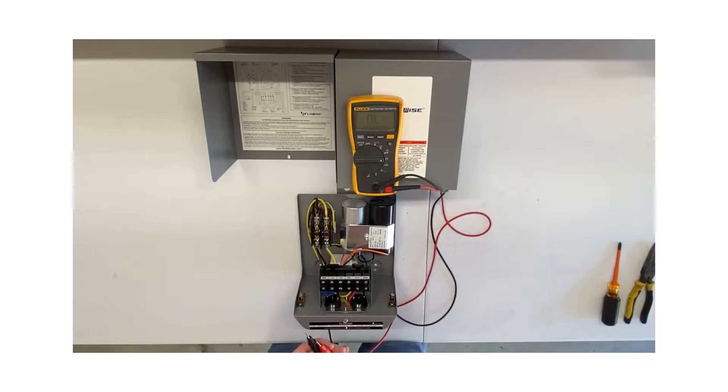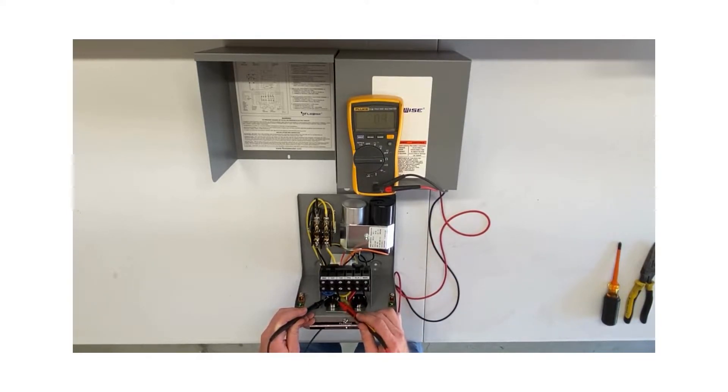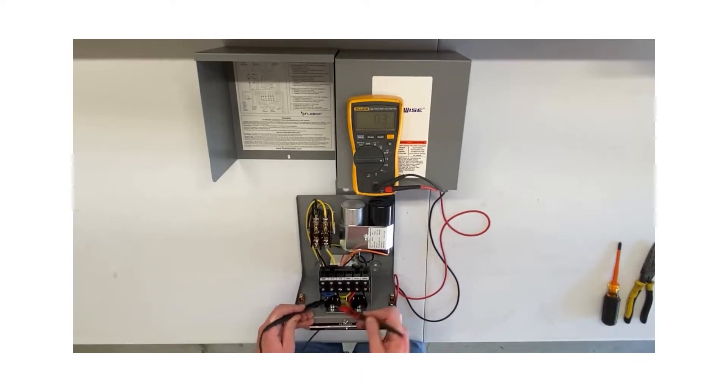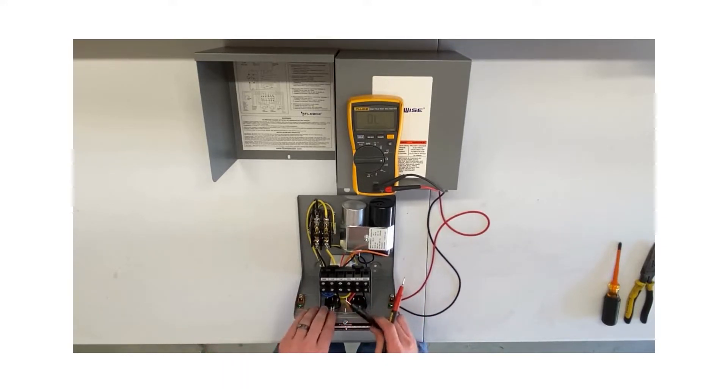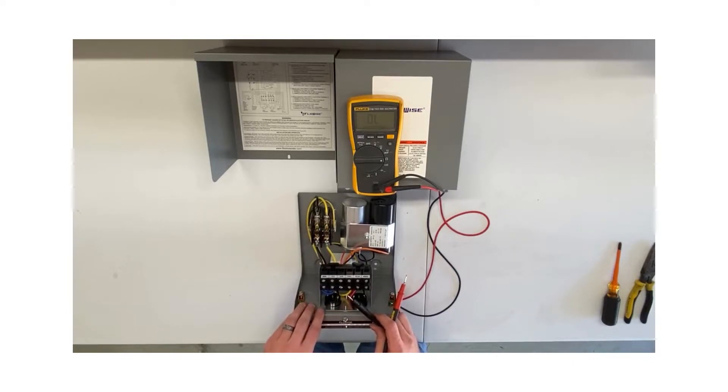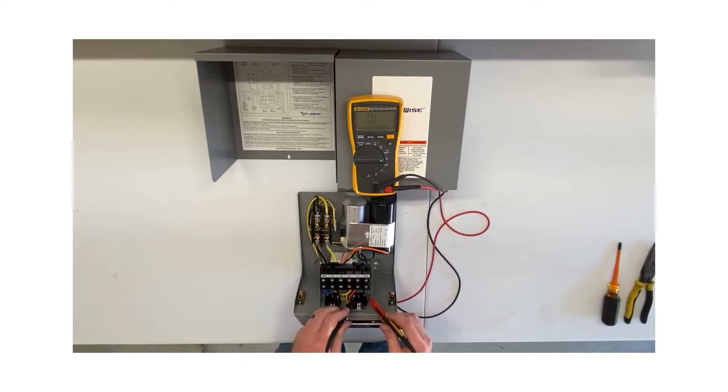I'm going to take one probe and touch it to one side of the overload and the other probe to the opposite side. I'm getting 0.3. My zero was 0.3, so when I subtract the two, I get zero. The manufacturer says for an overload to be good, the reading cannot be more than 0.5 ohms. We have zero ohms of resistance, which tells me this is good. Let's check the other one—0.3, so that one's good too.